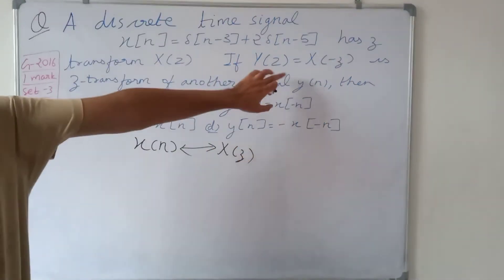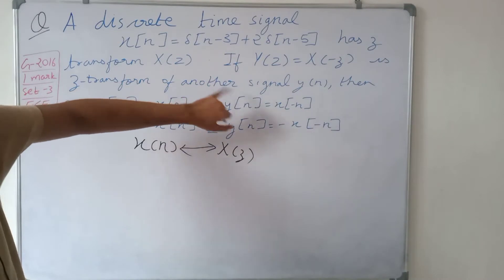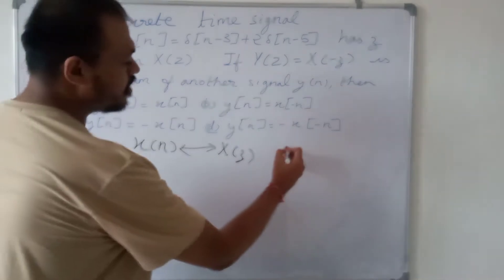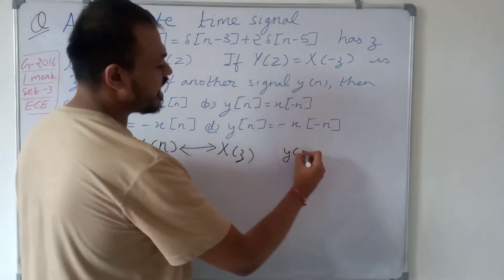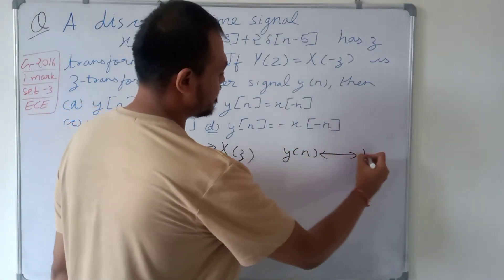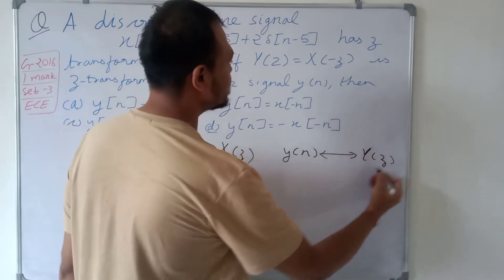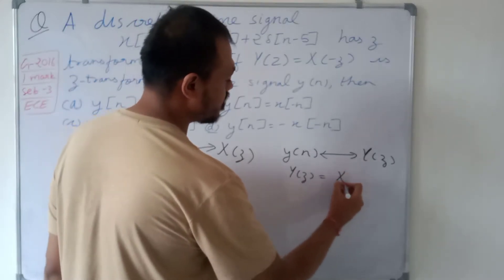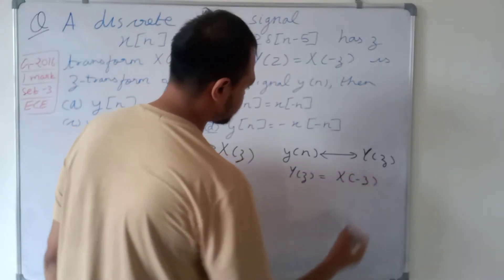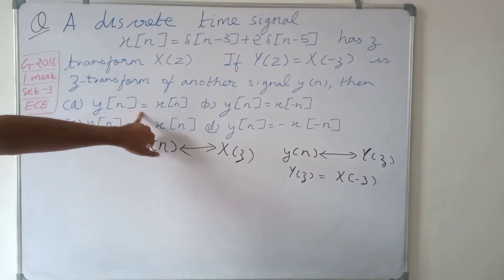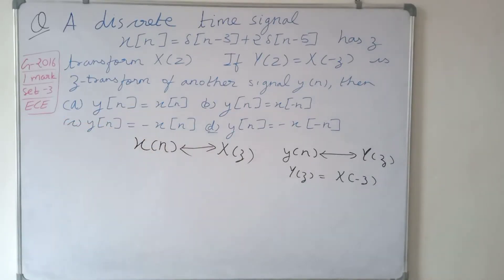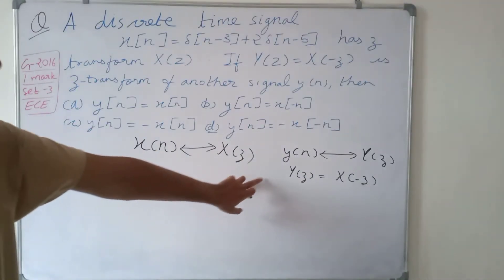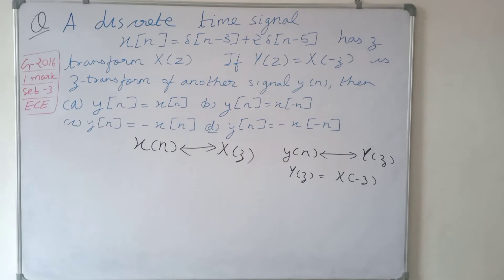Y of z is equal to X of minus z, which is the Z-transform of another signal y of n. So y of n has Z-transform Y of z, and the relationship between Y of z and X of z is given as Y of z equals X of minus z. We have to find the discrete time signal y of n.